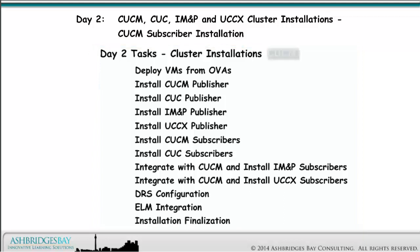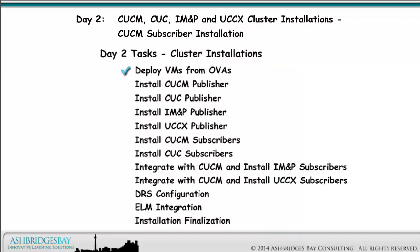On installation day — a literal day — we install our CUCM, CUC, IM&P, and UCCX clusters. Deploy all of the VMs from OVAs and attach the installation media. Install our CUCM, CUC, IM&P, and UCCX publishers, then install our CUCM, CUC, IM&P, and UCCX subscribers. Activate the services we need in the CUCM cluster when we install the IM&P and UCCX subscribers. Integrate IM&P and UCCX with CUCM when we install the IM&P and UCCX subscribers.